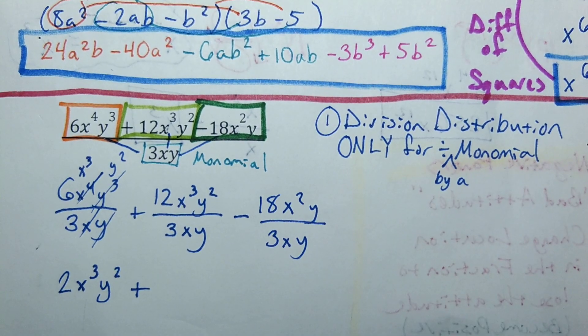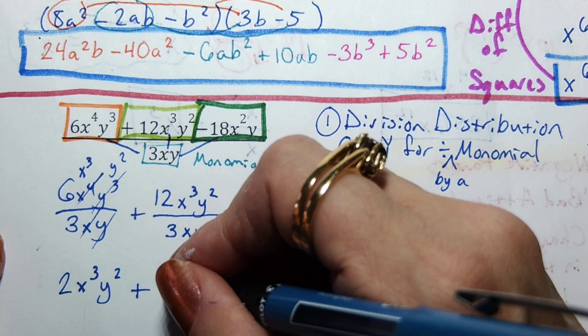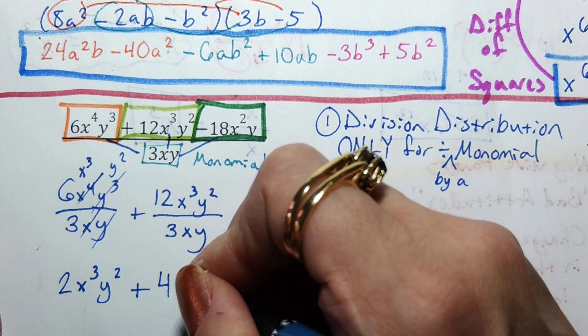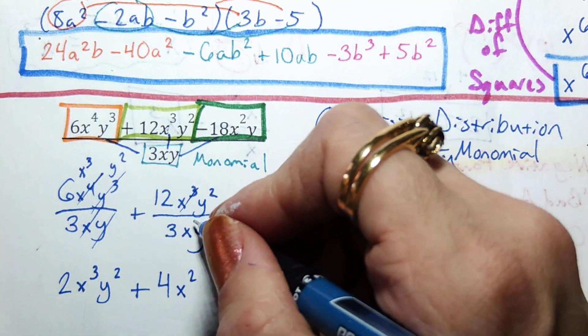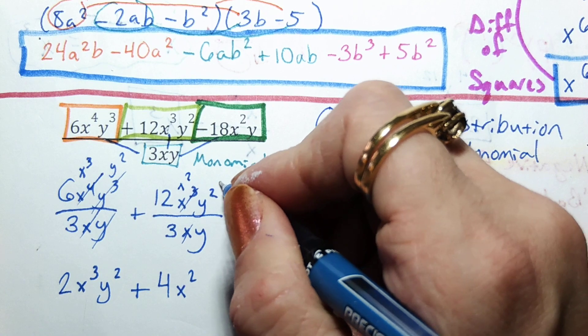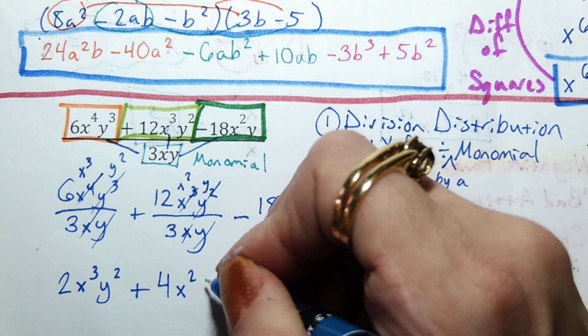12 divided by 3? Four. x^3 over x? x^2. Take a y out of both of those and we are left with y.